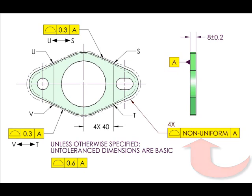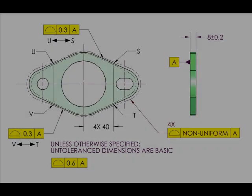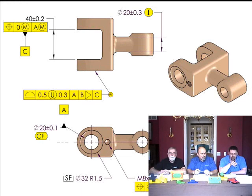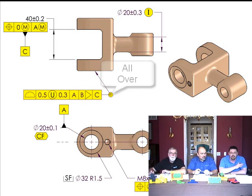It's a new way of documenting it. They've included an all-over symbol, where we used to have all-around to control the profile around contiguous geometries, now we have an all-over symbol.